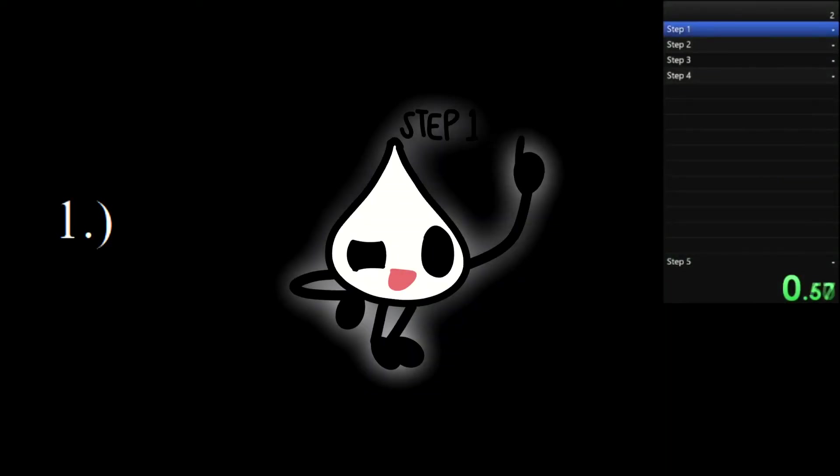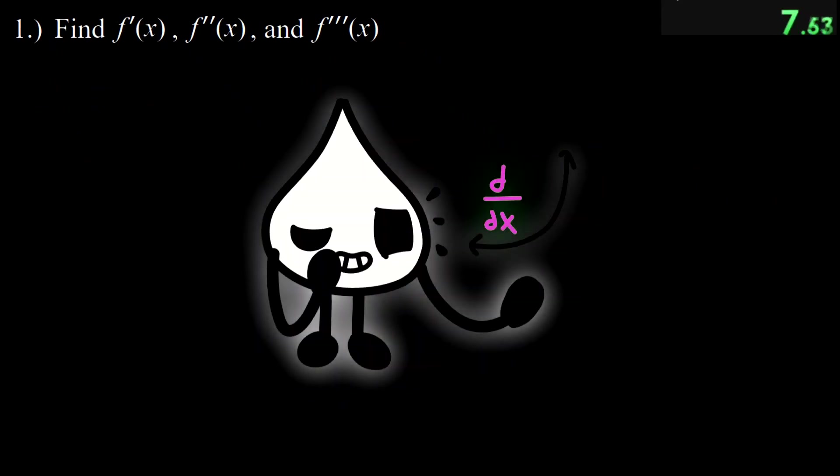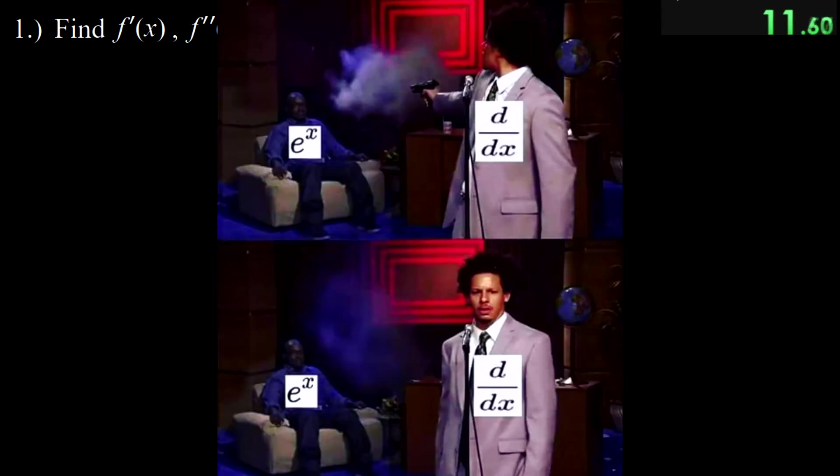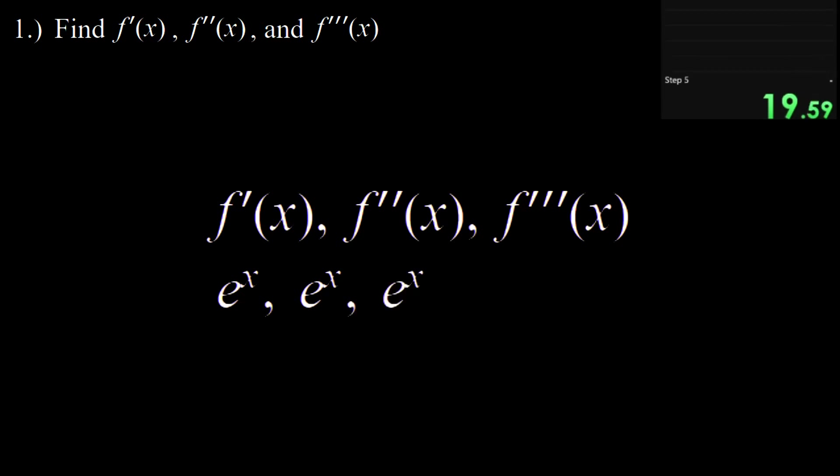Let's start with step 1. Find f prime, f prime prime, and f triple prime. Funny that we have to take the derivative of e to the x thrice because it's still e to the x no matter how many times you prime this guy. So it's e to the x, e to the x, and e to the x.